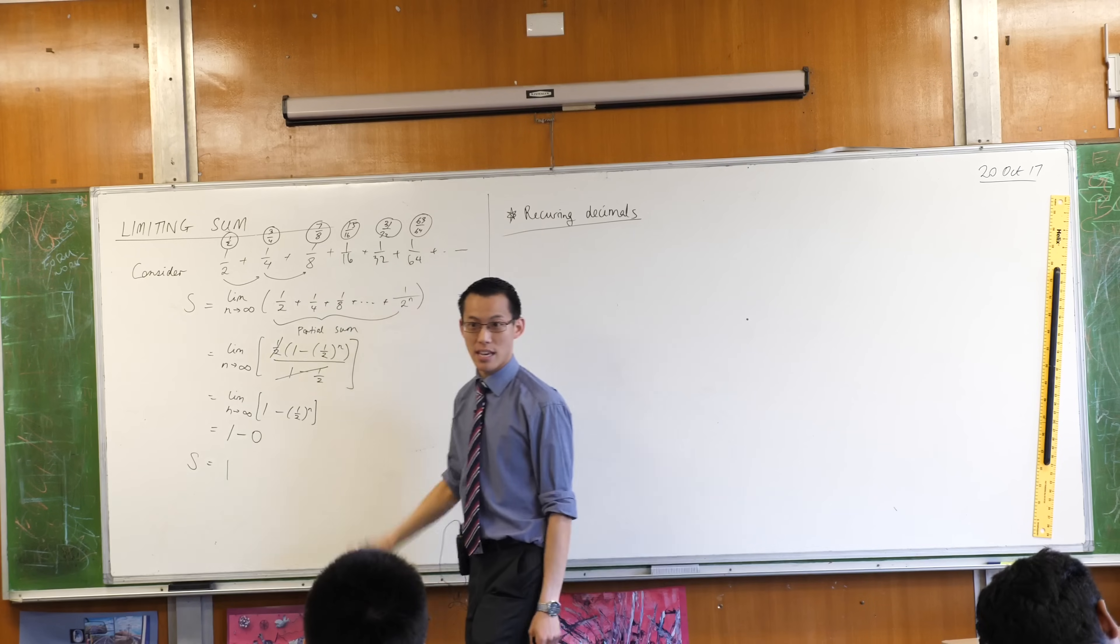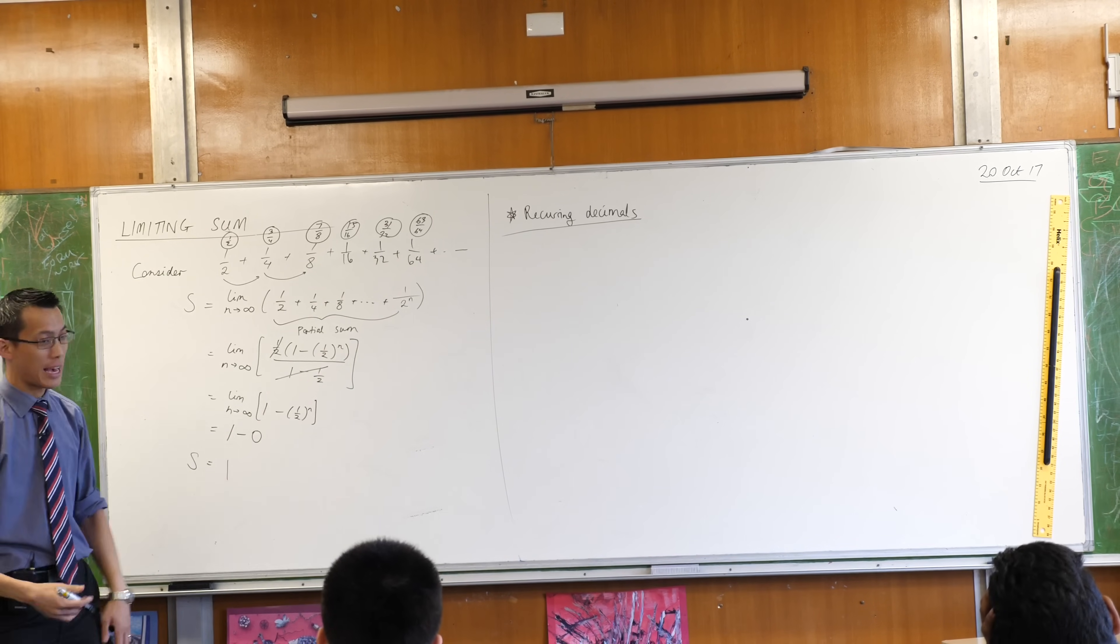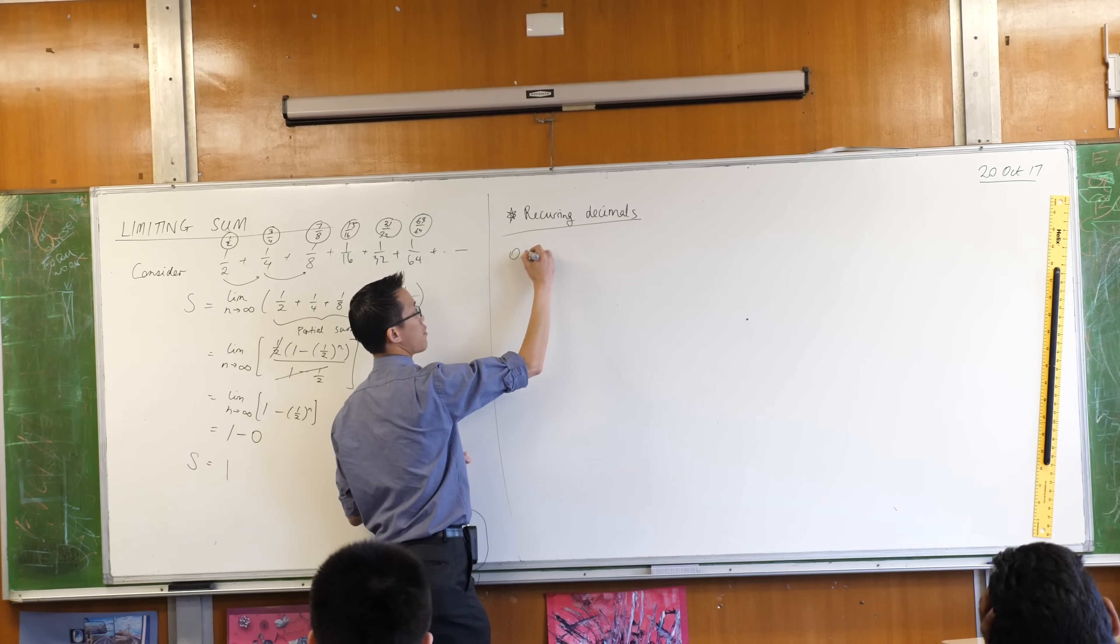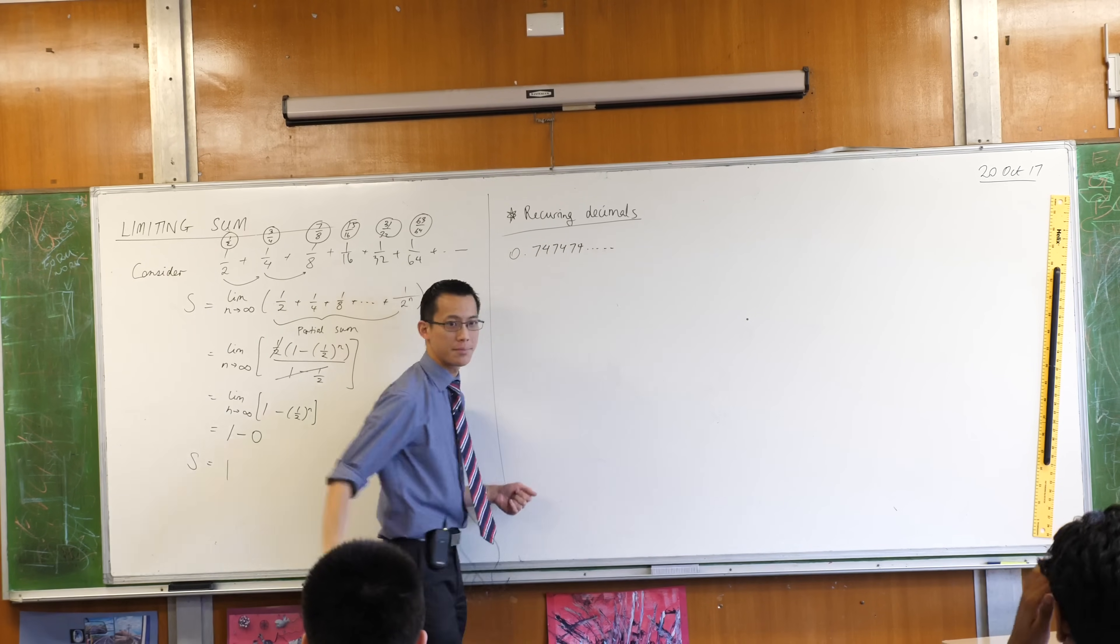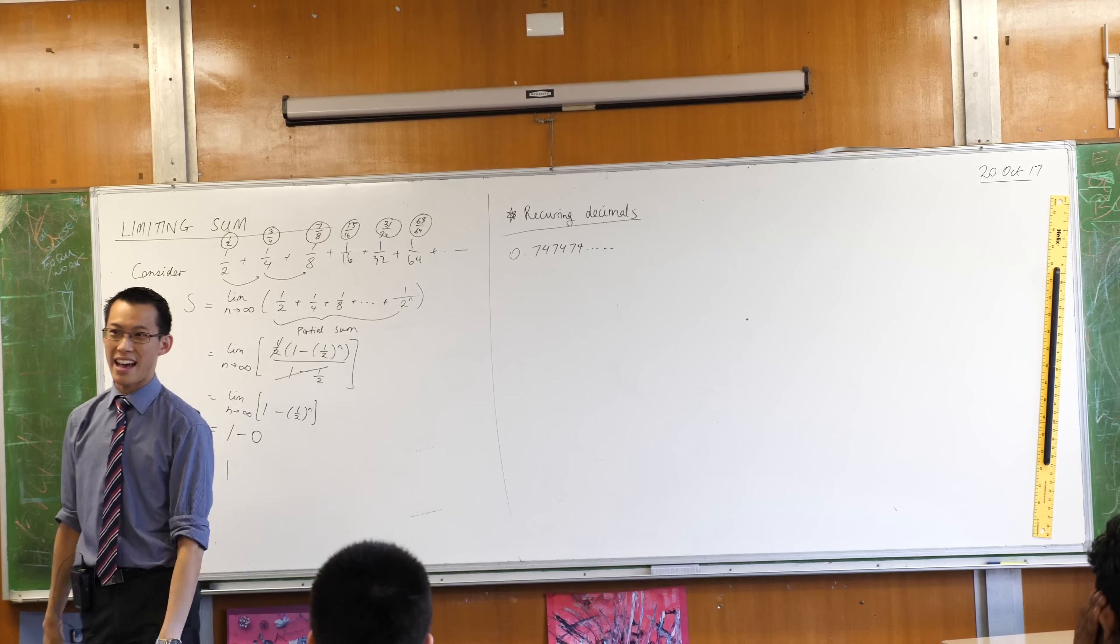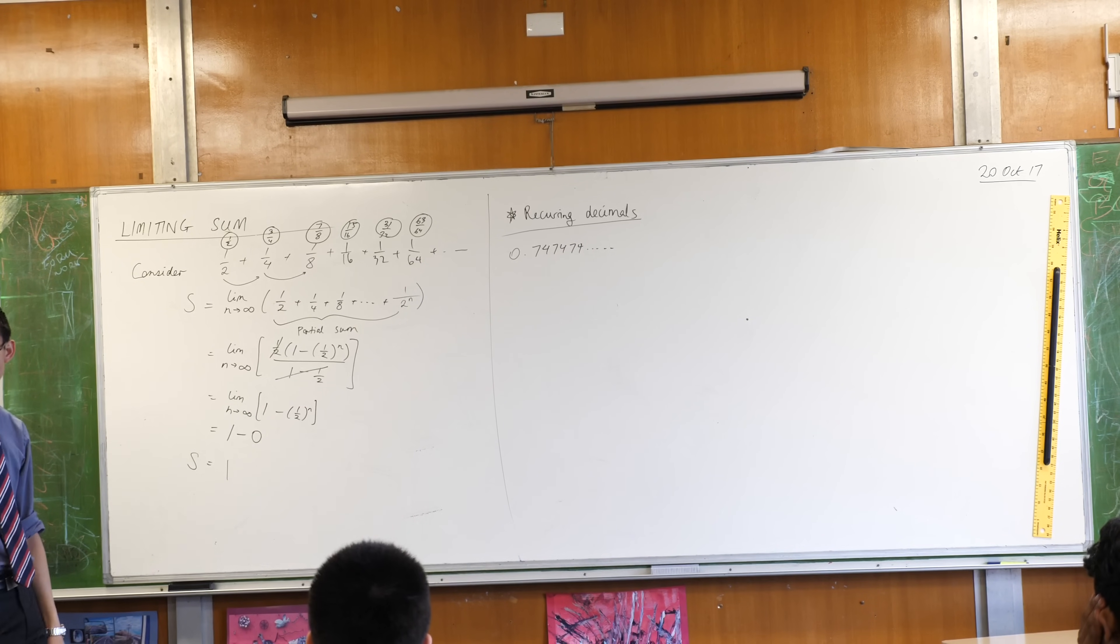Now, back in year 7, you learned how to take a recurring decimal like, for example, 0.747474... and you learn to express it as a fraction. You can actually use some fancy algebra to do that. But I think a much more elegant and nice way to do it is through what we've just shown here. Let me try and help you understand.